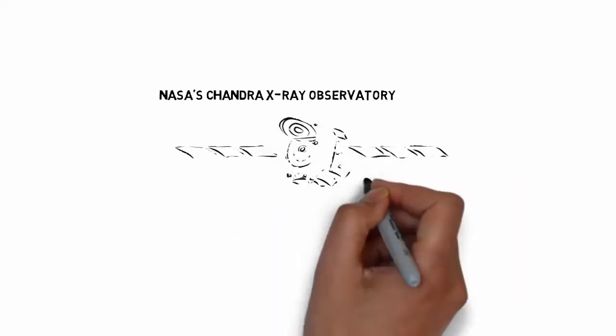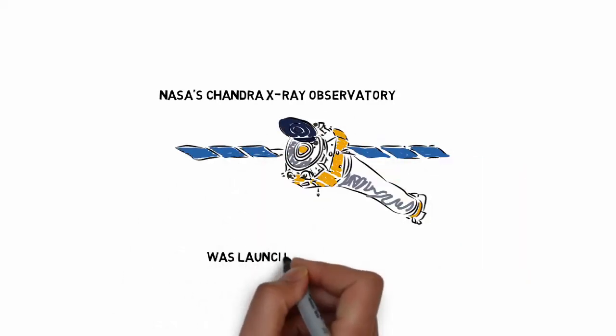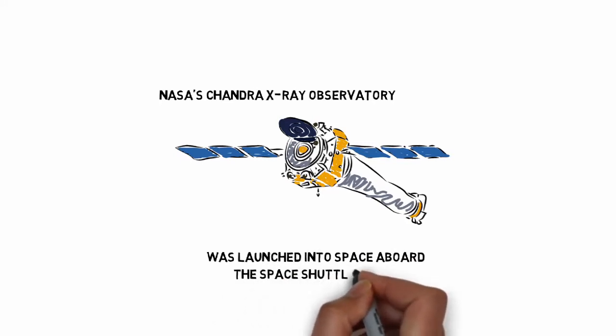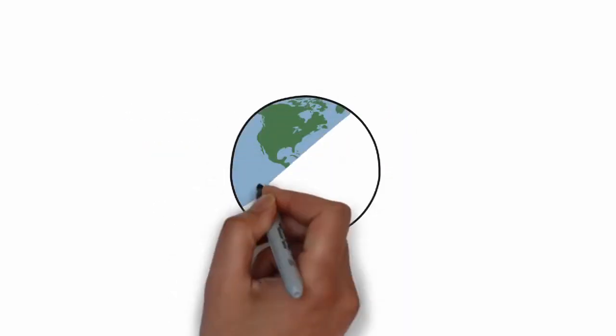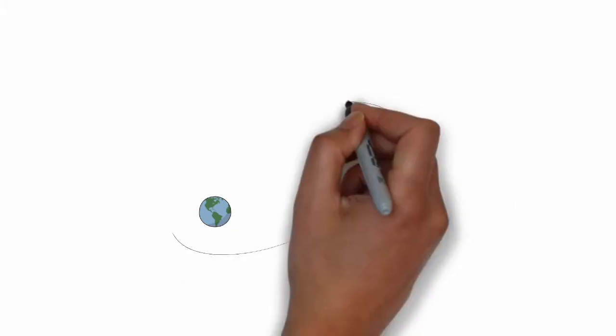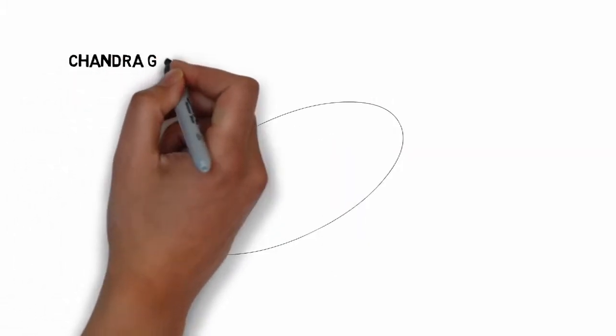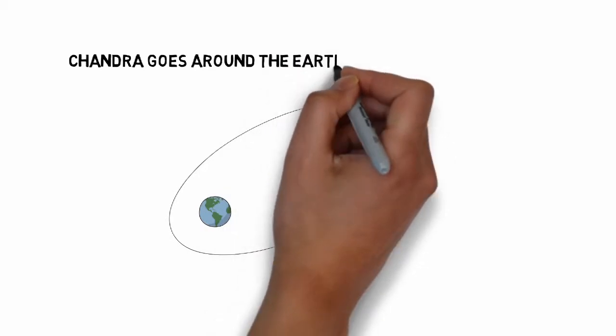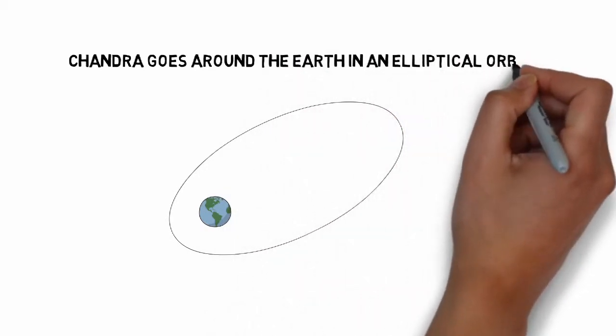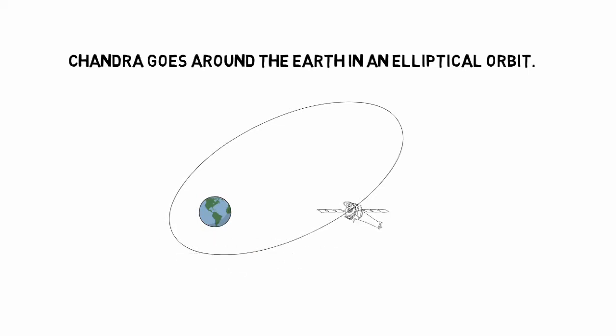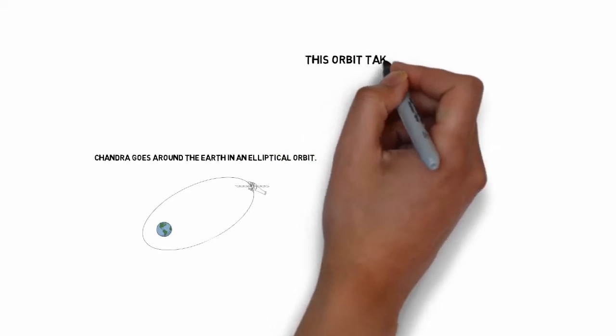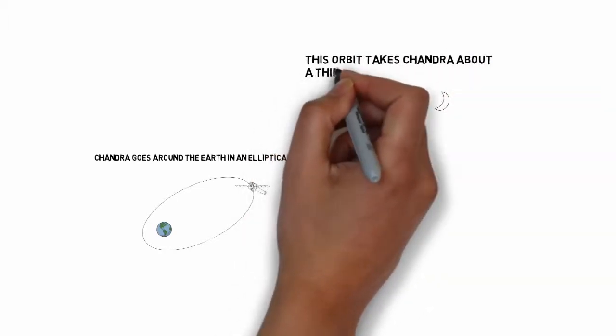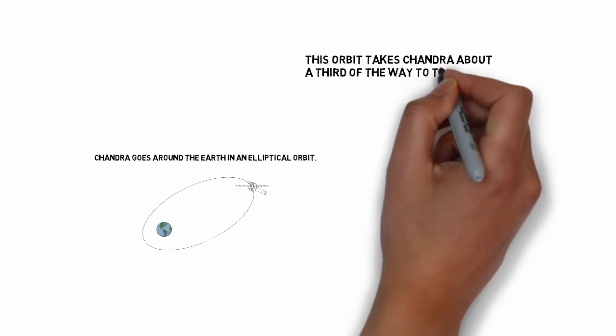NASA's Chandra X-ray Observatory was launched into space aboard the space shuttle in 1999. Chandra goes around the Earth in elliptical orbit. This orbit takes Chandra about a third of the way to the moon.